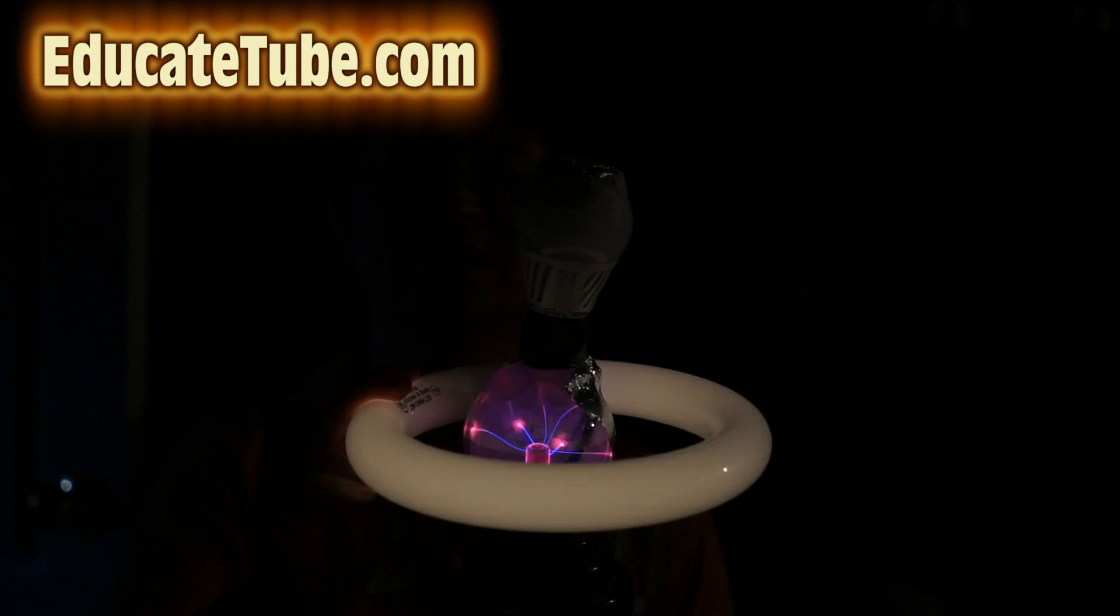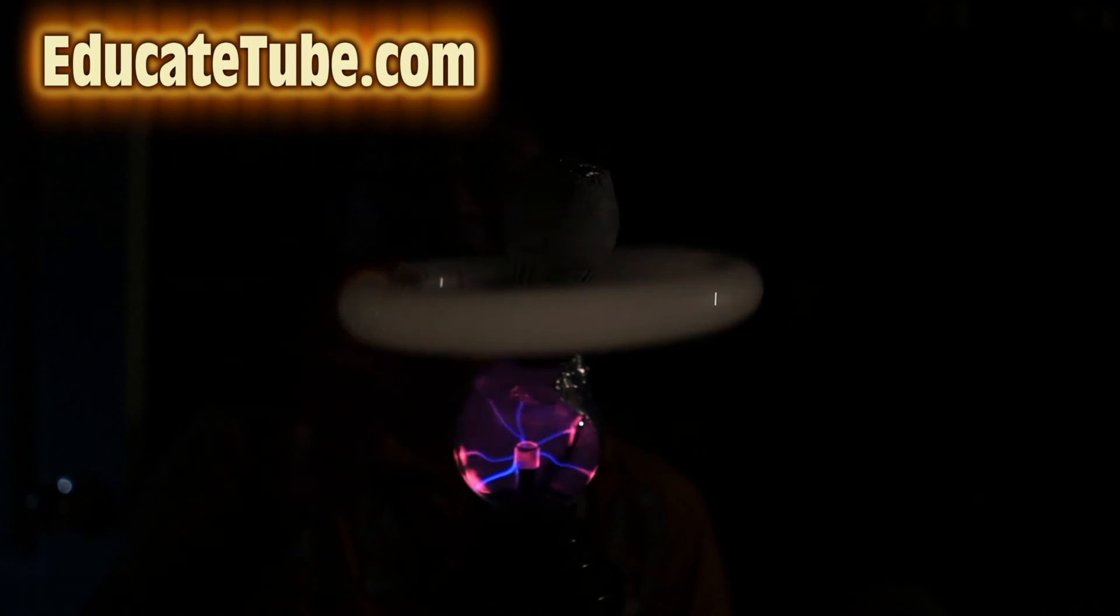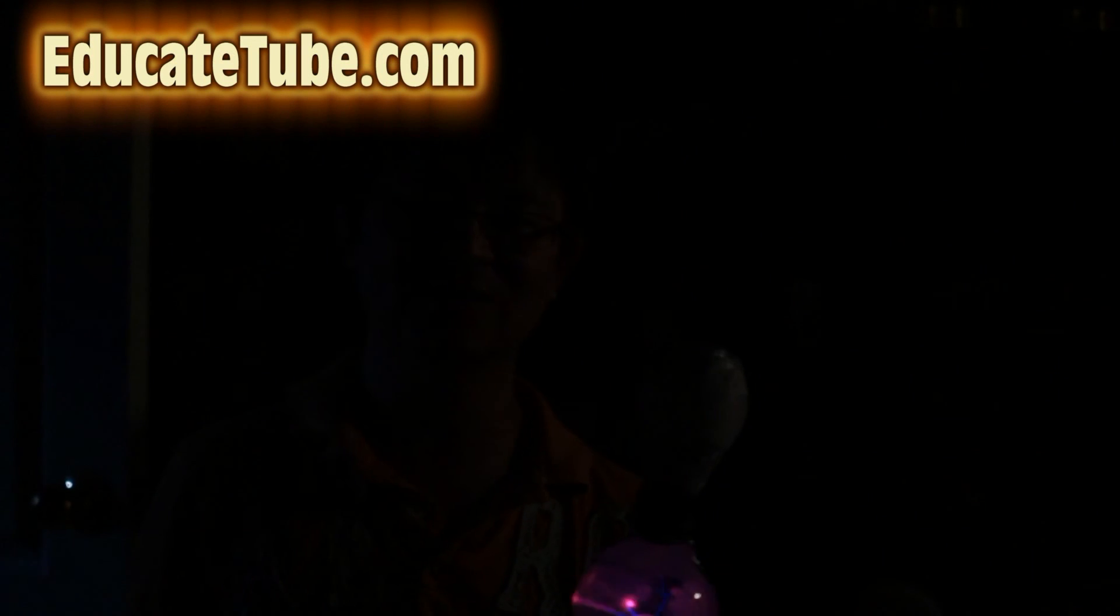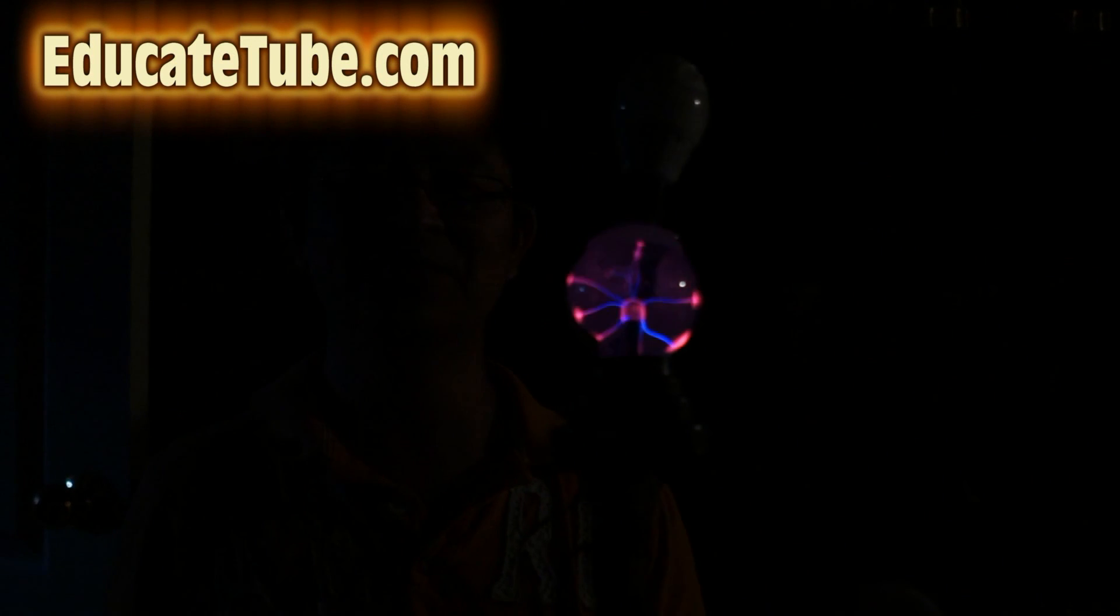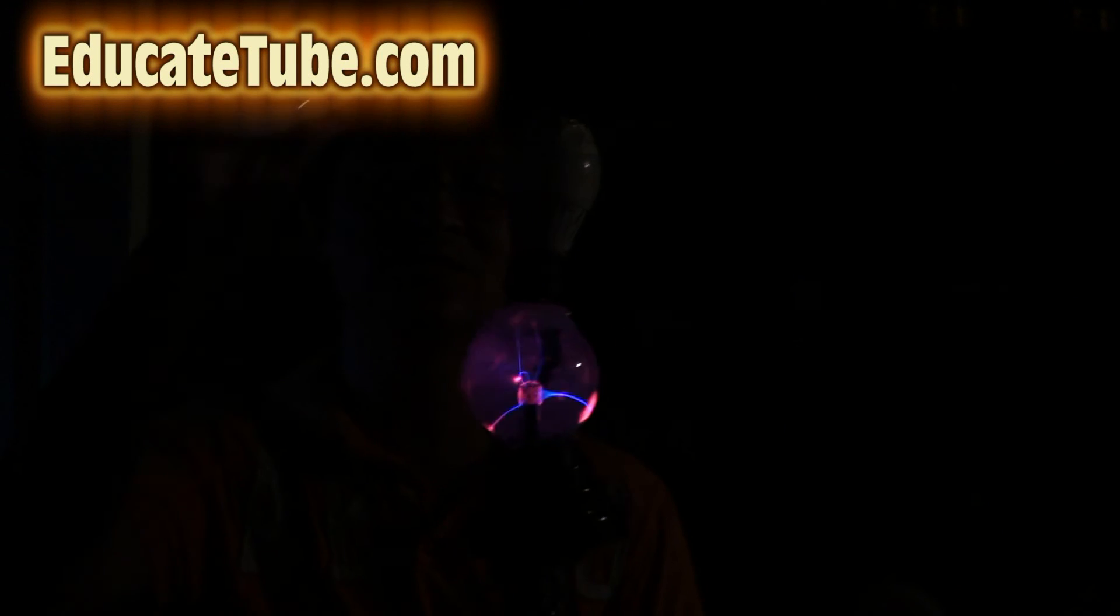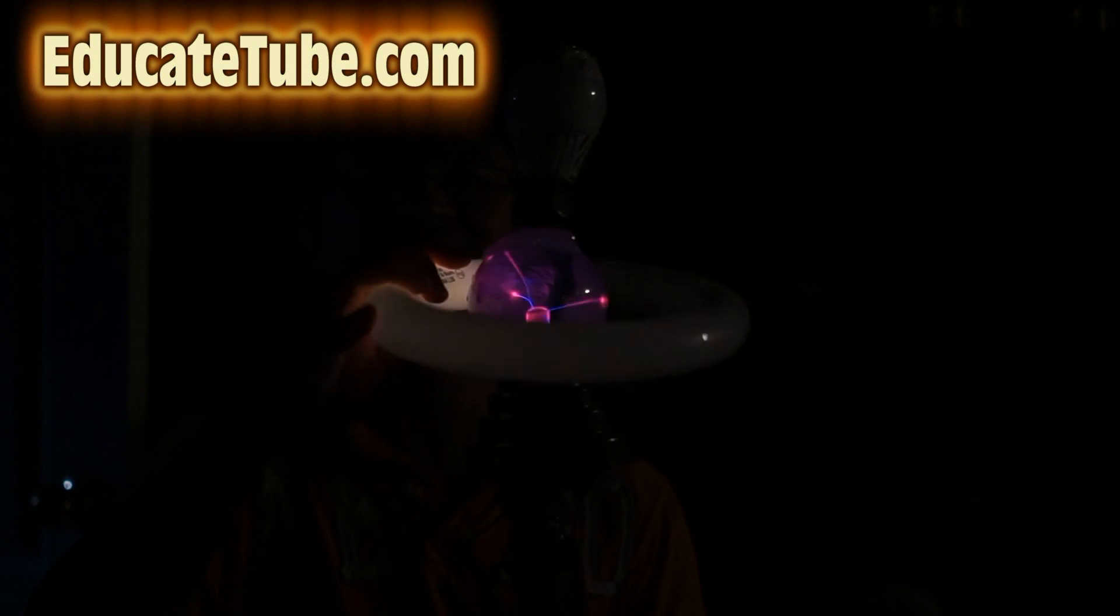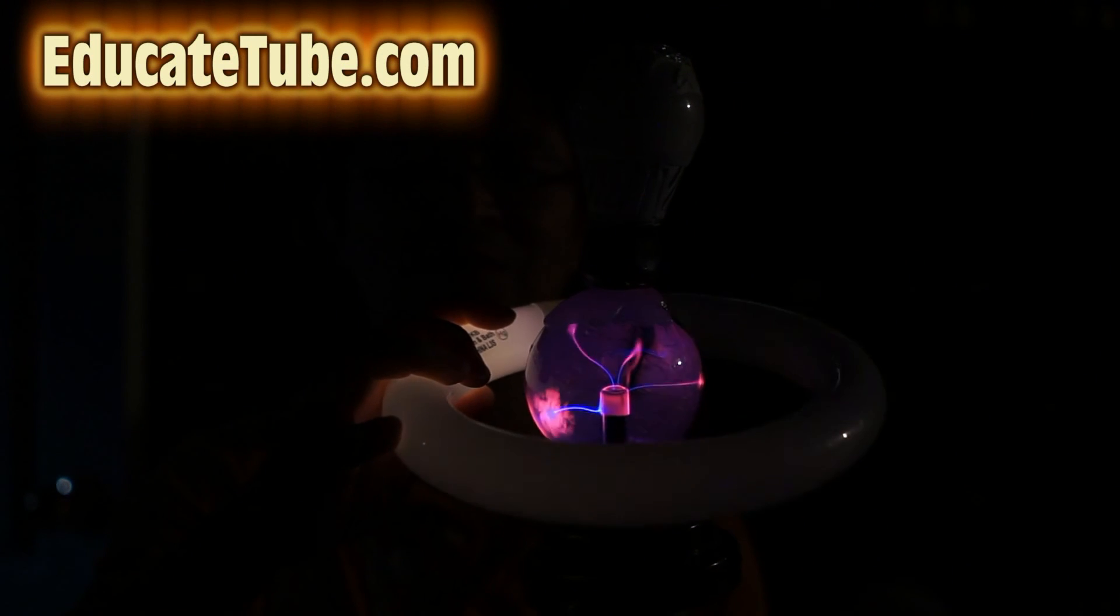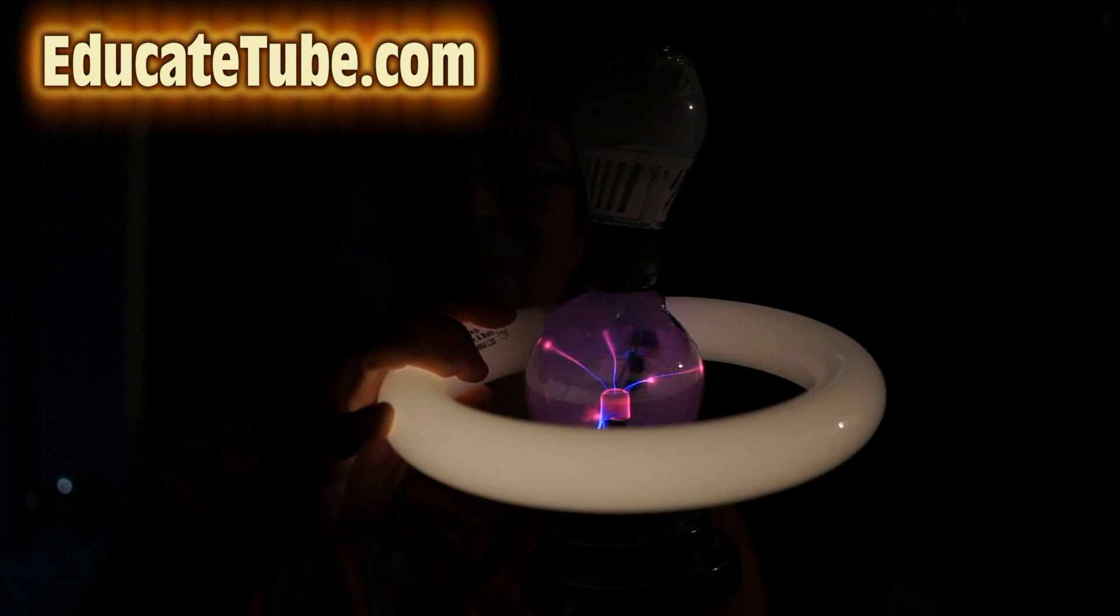Just by putting the ring on, you turn it on. Oh, that's cool. Look at that. Anyway, explain to me how the fluorescent tube works when it connects to the plasma. Write a comment below. So, thanks for watching. EducateTube.com. Whoo! Cool.